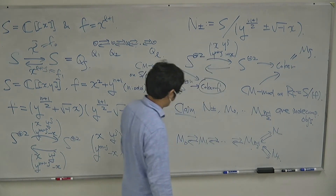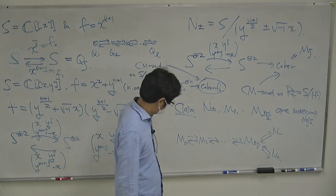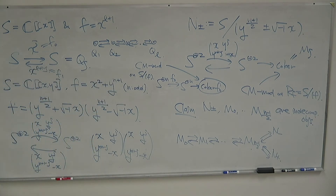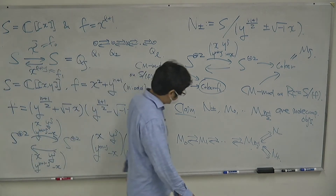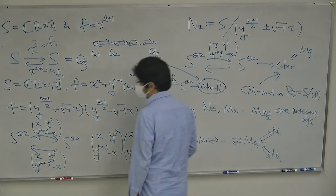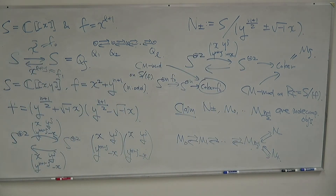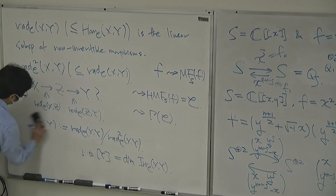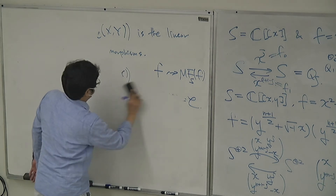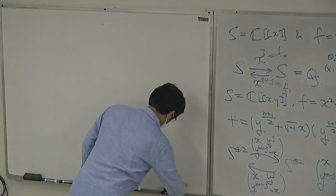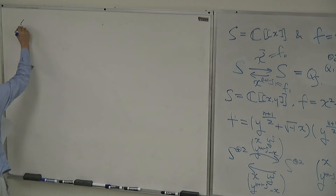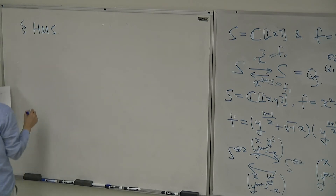So I can identify Cohen-Macaulay modules with matrix factorizations, up to some modification. The notion of indecomposable should be understood in the homotopy category of matrix factorizations, though one can also use indecomposable in the Cohen-Macaulay module sense. Let me now go back to the homological mirror symmetry conjecture.